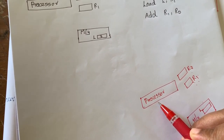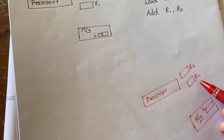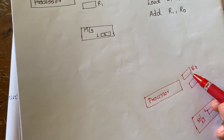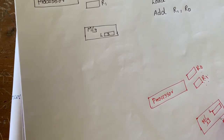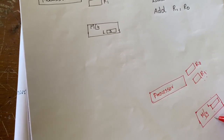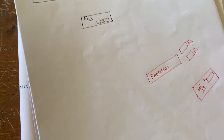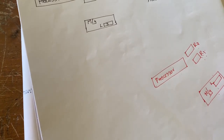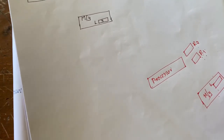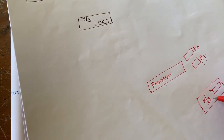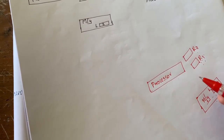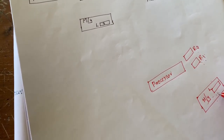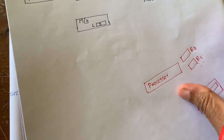The system also contains a memory unit, which can store information — in fact, it can store a large amount of information. One key difference is that the processor can access data quickly from its associated register units, but it takes more time when accessing data from the memory unit.